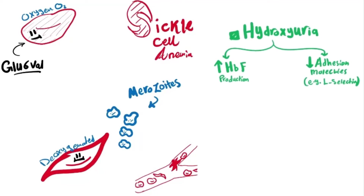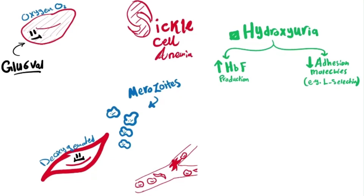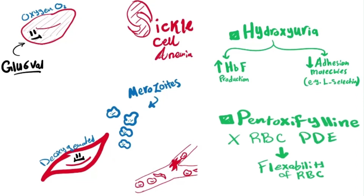Two drugs are available for sickle cell anemia. Hydroxyurea does two things: it increases production of fetal hemoglobin, which has higher affinity for oxygen, so the cells won't easily form the deoxygenated sickle shape. Normal cells can still deliver oxygen. Also, it reduces adhesion molecules like L-selectin, which are expressed on the cells and make them easier to clump — so it reduces the expression of those molecules. Another drug is pentoxifylline, which inhibits the phosphodiesterase enzyme of red blood cells, which generally increases the flexibility of red blood cells.